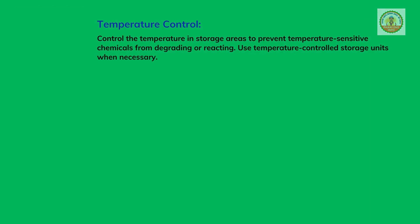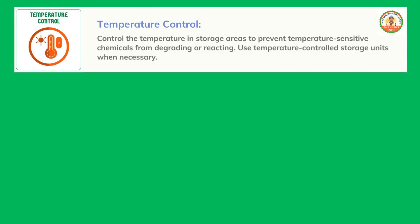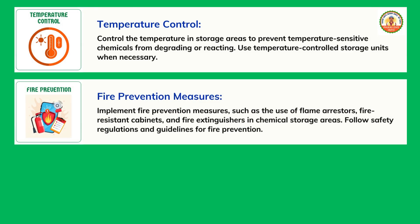Fire Prevention Measures: Implement fire prevention measures, such as the use of flame arresters, fire-resistant cabinets, and fire extinguishers in chemical storage areas. Follow safety regulations and guidelines for fire prevention.